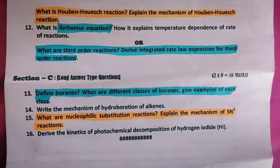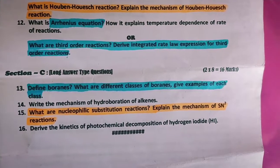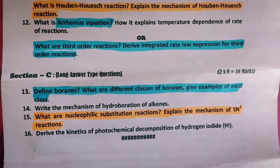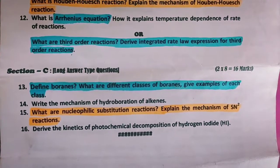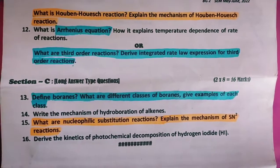Section C is long answer type questions carrying eight marks each. We have to attempt only two questions. Question 13: Define boranes. What are different classes of boranes? Give examples of each class.